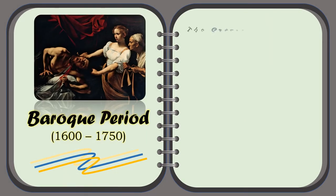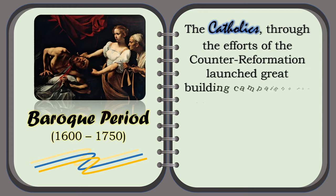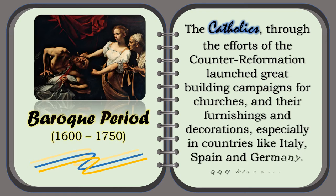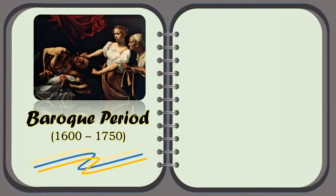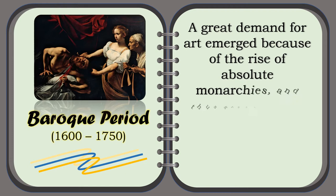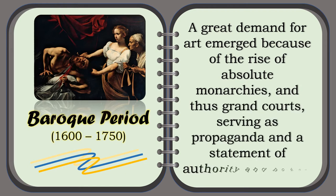The Catholics, through the efforts of the Counter-Reformation, launched great building campaigns for churches and their furnishings and decorations, especially in countries like Italy, Spain, Germany, and Flanders. A great demand for art emerged because of the rise of absolute monarchies and thus grand courts, serving as propaganda and a statement of authority and power.